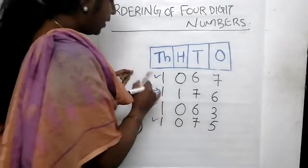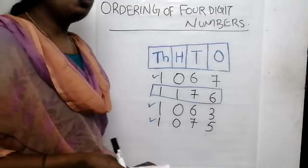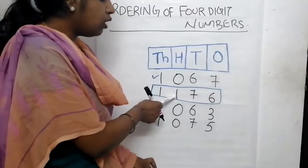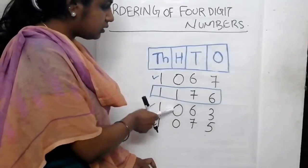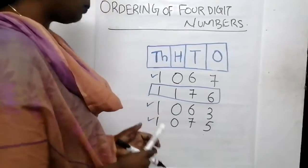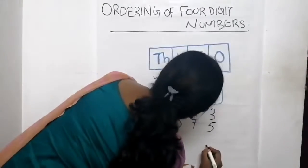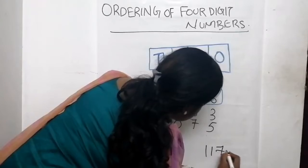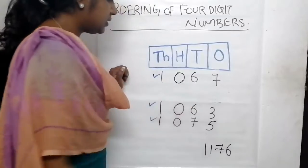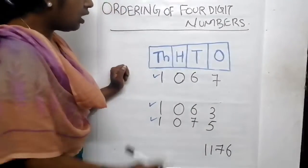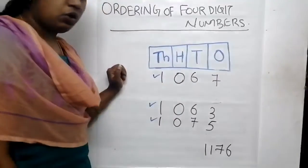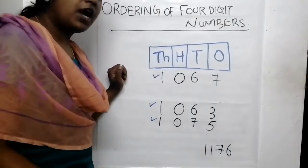Let's compare between these 3 numbers. This number 1,176 will be the largest because it has 1 in its hundreds place and all the other numbers have 0 in their hundreds place. So we can remove this number and write it here: 1,176. Now the numbers left are 1,067, 1,063, and 1,075.